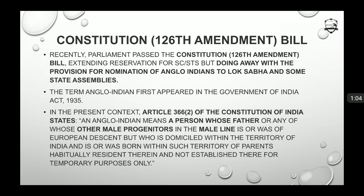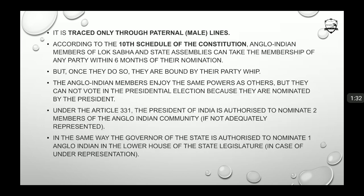Anglo-Indians first appeared in the Government of India Act 1935. According to Article 366(2) of the Constitution of India, an Anglo-Indian means a person whose father or any of the male progenitors in the male line is of European descent, and that person must be domiciled in India. This is traced only through the paternal, that is, the male line — the maternal line is not considered.